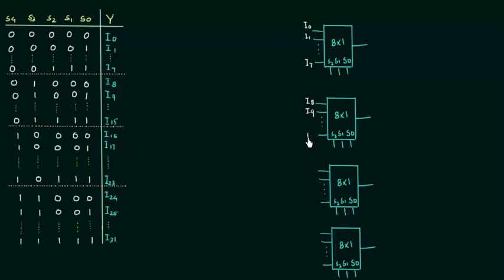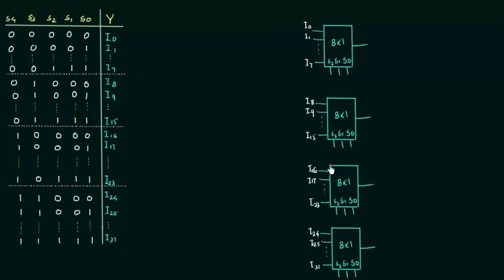For the third multiplexer the inputs are I16 through I23. For the fourth multiplexer the inputs are I24 through I31. So these are our 4 8x1 MUXes with selector variables S0, S1, and S2.